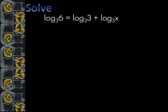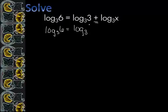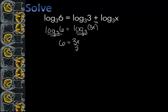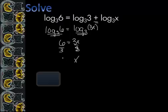Solve: log base 3 of 6 equals log base 3 of 3 plus log base 3 of x. When we add, it's the same thing as multiplying, so the left side stays the same and we have log base 3 of 3x. Since we have log base 3 on both sides, we can say 6 equals 3x, and when we divide by 3 it turns out that x equals 2.